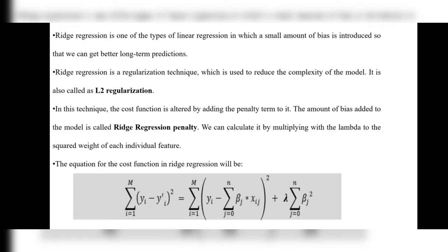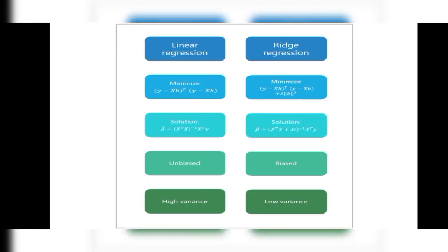Ridge regression is a regularization technique used to reduce the complexity of the model. It is also called L2 regularization. In this technique, the cost function is altered by adding a penalty term to it. In the formula, we take the linear regression cost (y − Xβ)ᵀ(y − Xβ) and add the penalty term λ‖β‖² — that extra squared term is the ridge regression penalty.